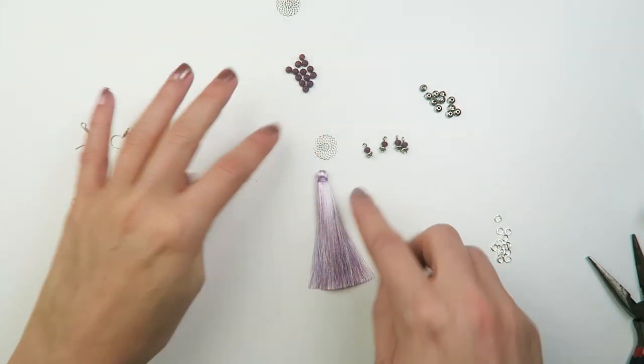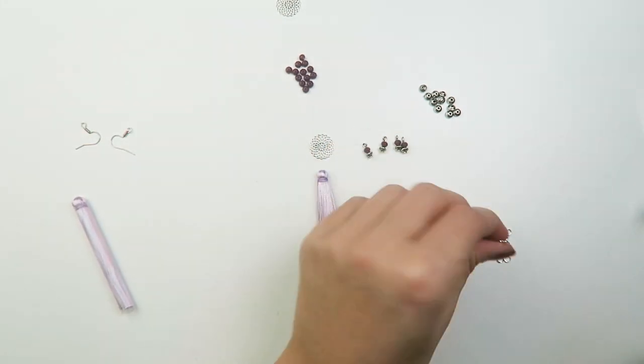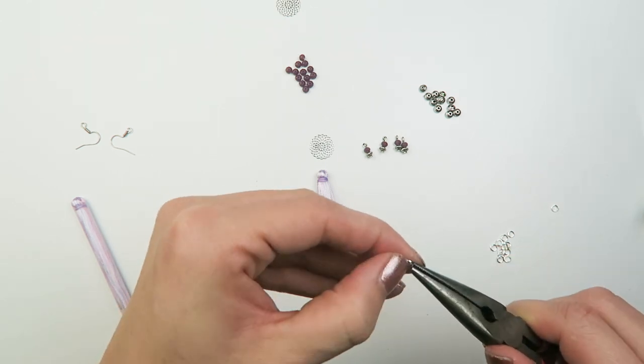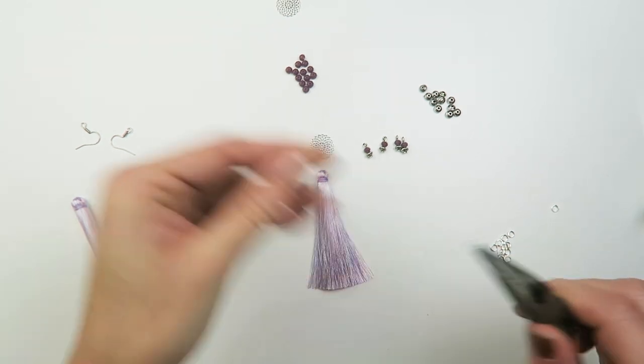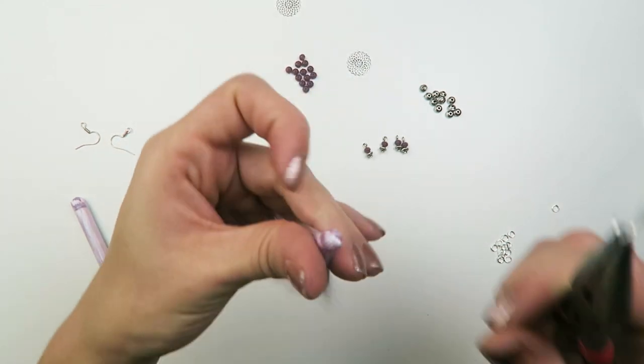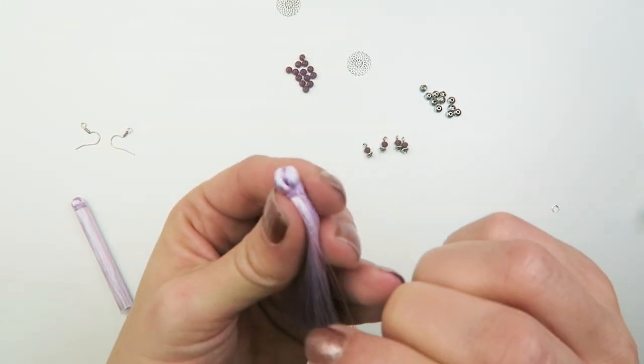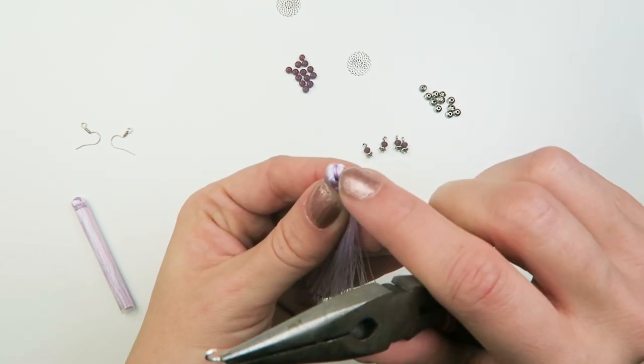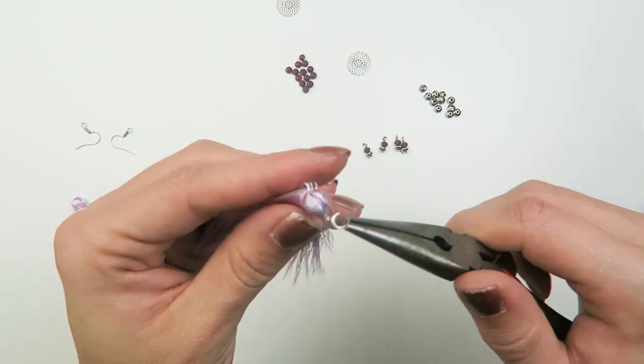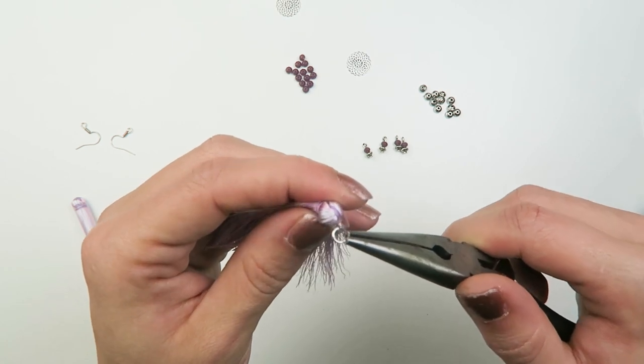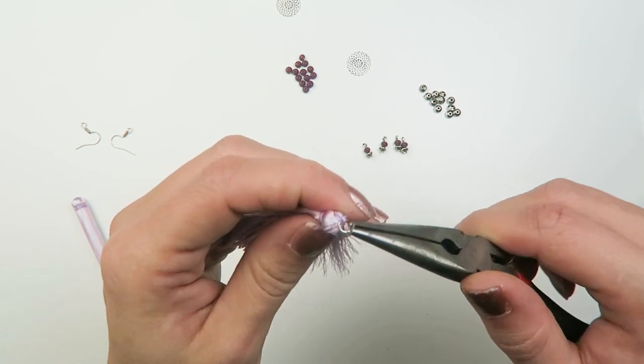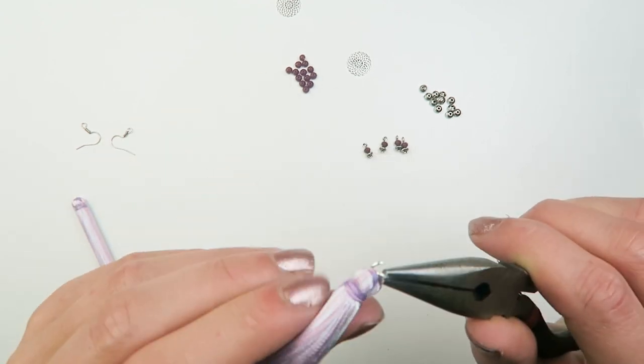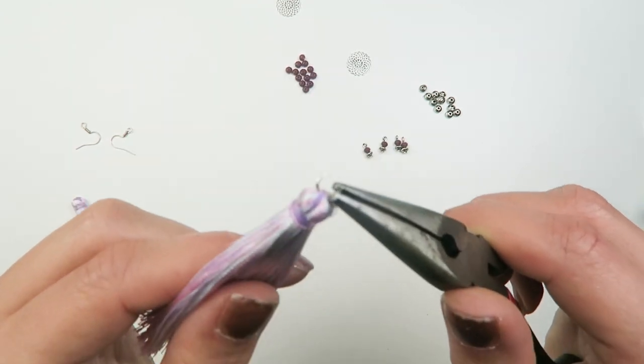So these are my four charms. And now I just have to attach everything to my Bohemian connector. So I'm going to use four millimeter jump rings. And I don't know if you can see it very well on the camera. Oh yes you can. The tassel has a couple of strings here on the top, and that's what I'm going to use to hook my jump ring under.